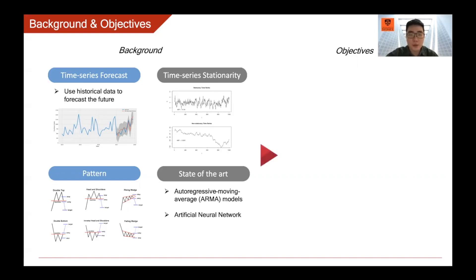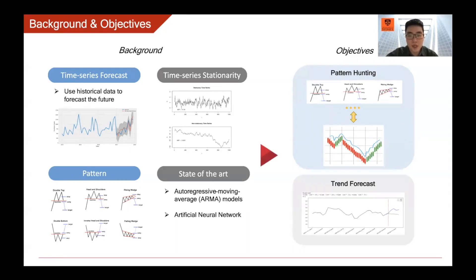Therefore, we would like to make certain advancements on forecasting non-stationary time series data. There are two major objectives of this project. First, hunting accurate patterns and verify whether they are useful for improving forecasting performance. Second, forecasting a longer period of future and try to predict the possible peak and valley points, which are critical for decision making.